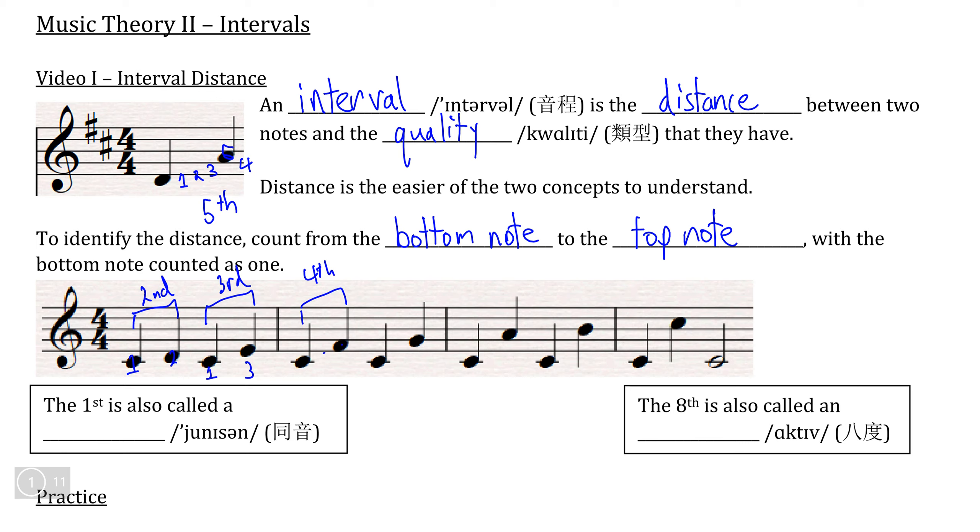C to G is the same interval between D and A because if we count from C to G—C, D, E, F, G—we have to count up five times. So this is an interval of a fifth.